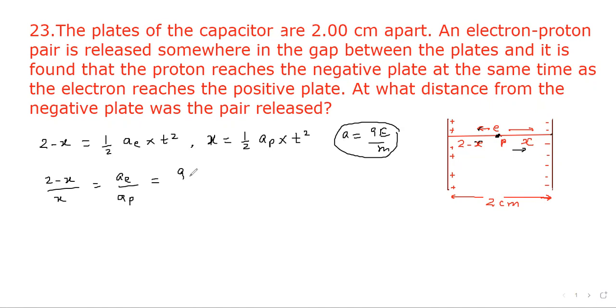a equals q times E divided by m. Since charge on proton and electron is the same, this will also be qE where E is the electric field, divided by the respective masses.